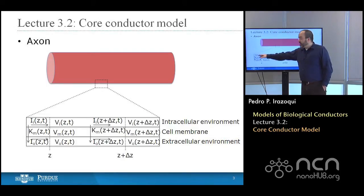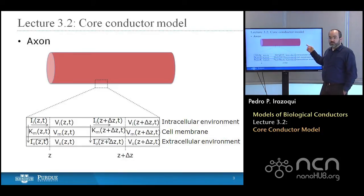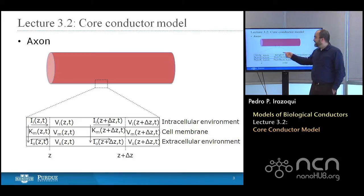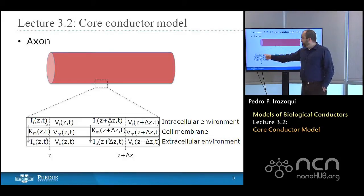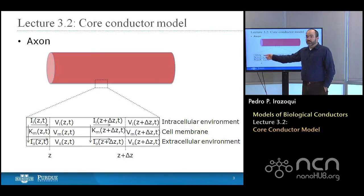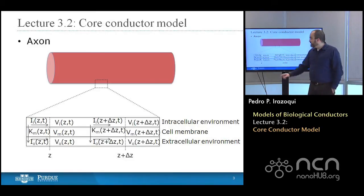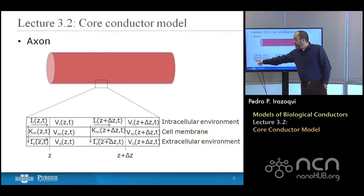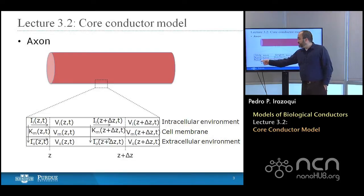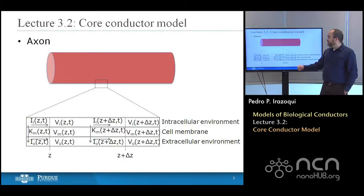We'll define a series of variables. I sub I is the current inside the cell, as a function of Z, the position along the length of the axon, and T, time. V sub I is the voltage inside the cell, also a function of Z and T. I sub O is the current outside the cell, a function of Z and T. And V sub O, the voltage outside the cell, is also a function of Z and T.